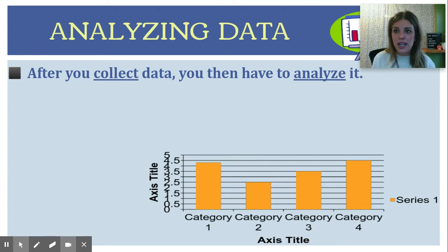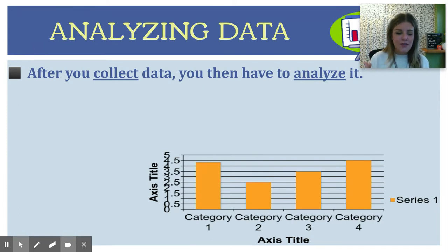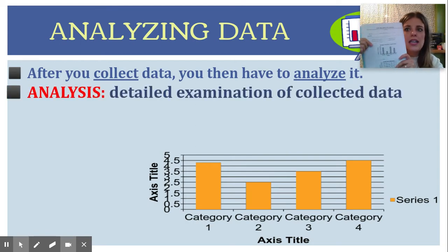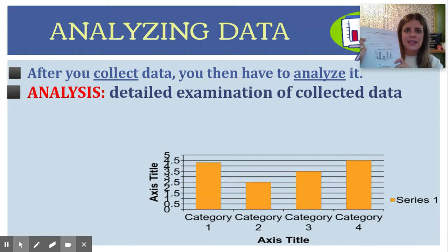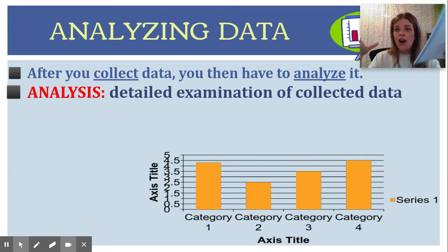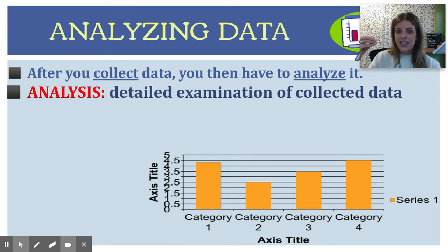Scientists are collecting as much data as they possibly can, so they have to keep it organized so that they can find it when they need it. And then after you collect it, you want to analyze it. You're going to fill in the blanks in your notebook with the words that are underlined, then put the definition for analysis. An analysis is a detailed examination of collected data — you are looking at it with a new lens and trying to understand what the data is telling you.